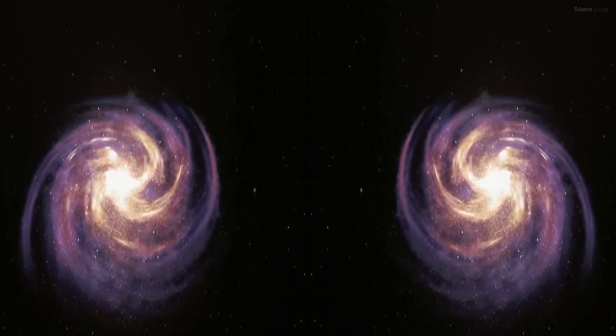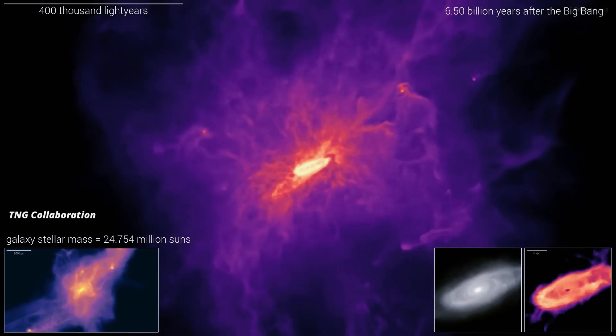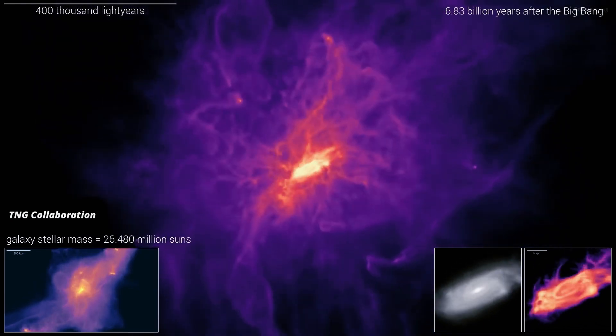And yet, the result was the same. A strong directional preference in galactic spin. This suggests that the universe may not be uniform after all.